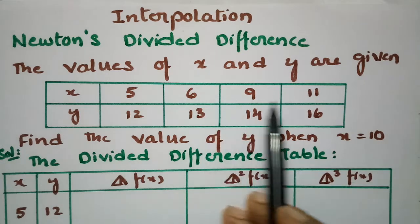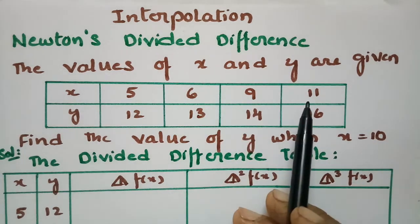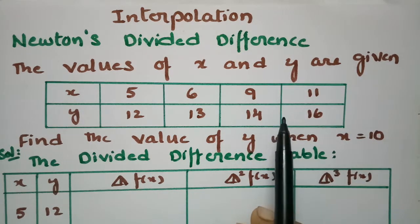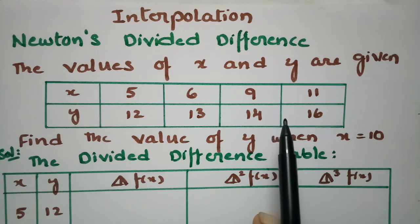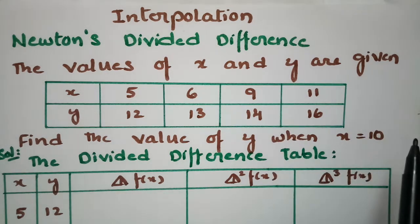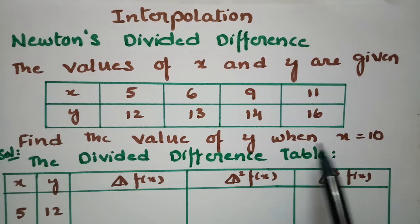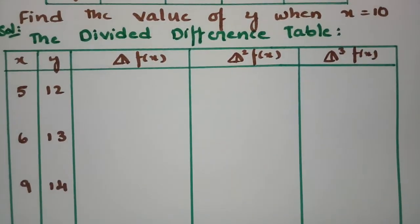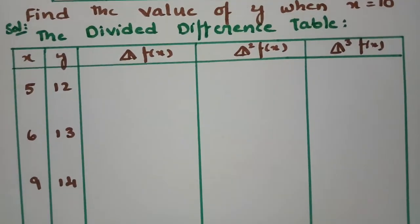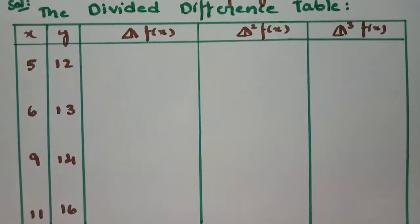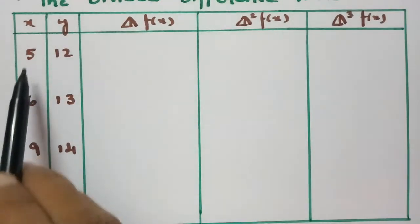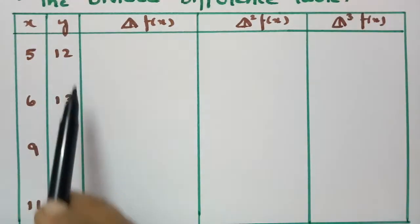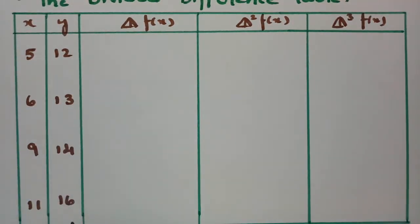When the x value is 10, it lies between 9 and 11, so we have to find out the value of y using Newton divided difference. First of all, we build the divided difference table. The values plotted are 5, 6, 9, 11 and the corresponding y values are 12, 13, 14, and 16.